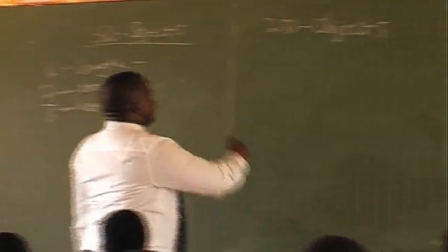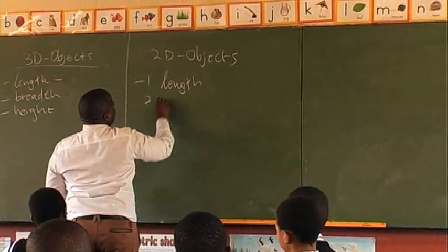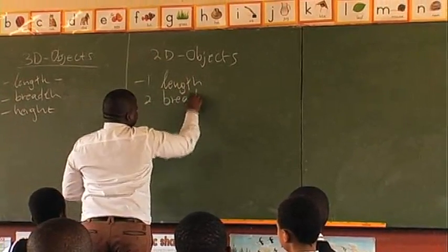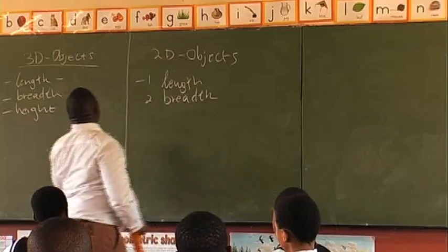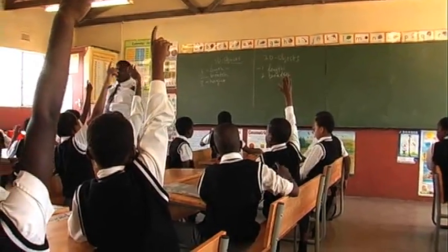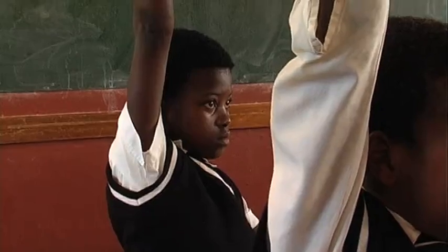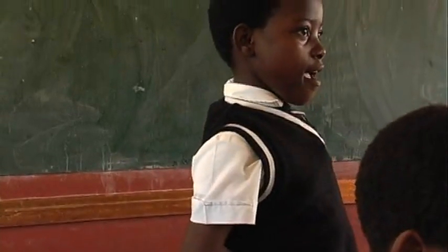Now let's talk about the 2D. The length and the breadth. Dimension number one is the length and dimension number two is what? It's the breadth. Can you give me an example of the 2D shape? An example of the 2D shape — go ahead. It's a square.